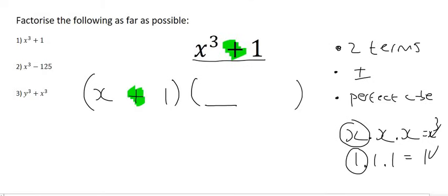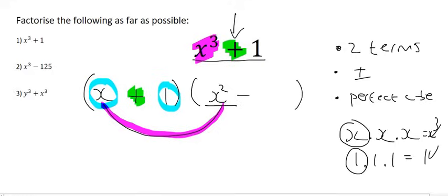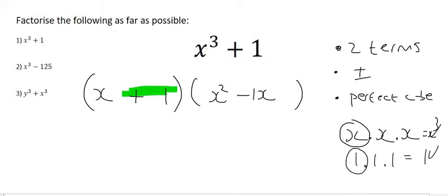Next, the first number that's going to go over here will be x squared. Why did I do that? Because you want these two to be able to give you this term over here. What we now do is we flip this sign over, so it's now a negative. We then multiply the two that I've just highlighted in turquoise, the x and the 1, and that's just going to give us 1x.